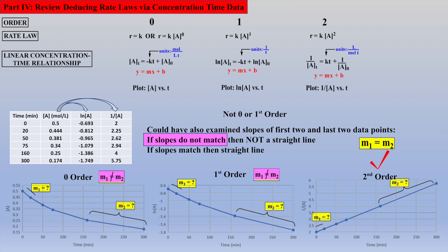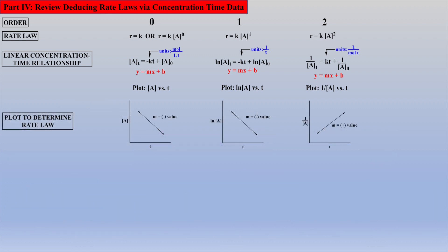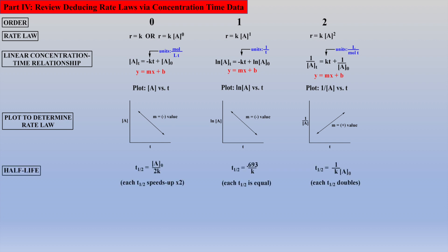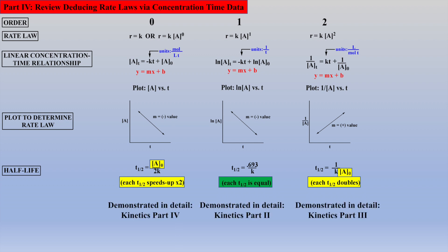However, if the slopes do match, this is the definition of a straight line. Thus, the plot is considered to be linear, which proves the reaction follows second-order kinetics for this example. Also covered in the previous three videos in detail was the derivation and employment of the half-life equations. Interestingly, in zero- and second-order kinetics, there was a concentration dependency, which caused subsequent half-lives to change. In contrast, within first-order kinetics, the half-lives remained constant because there is no concentration dependency. Again, these concepts, as well as example exercises, are examined within the previous videos of this series.